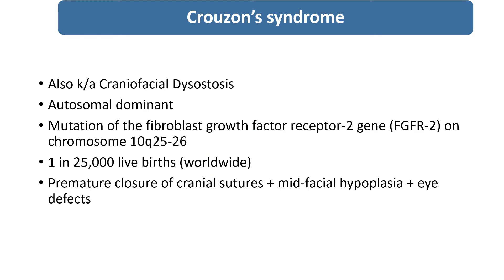In brief about Crouzon syndrome: it is craniofacial dysostosis, autosomal dominant, due to mutation of fibroblast growth factor receptor 2 (FGFR2) gene on chromosome 10. Incidence is 1 in 25,000. Premature closure of the cranial suture, mid-facial hypoplasia, and eye defects form the classical triad of Crouzon syndrome.